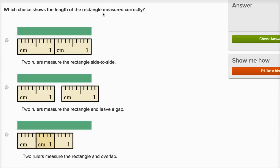Which shows the length of the rectangle measured correctly? All right. So here we have this green rectangle, and let's see, how did we measure it? We have one centimeter right over here, and then we put another centimeter right over here, and they say two rulers measure the rectangle side to side.